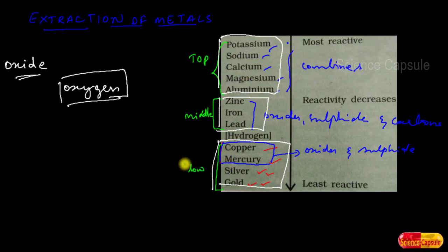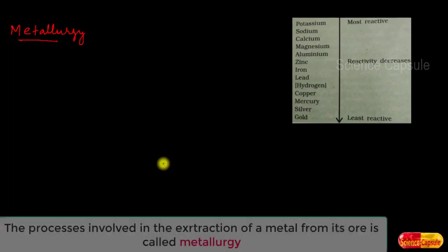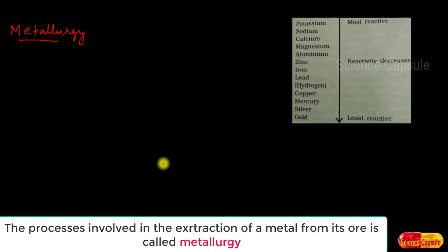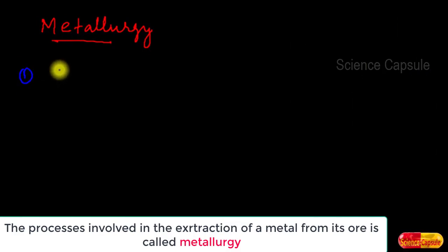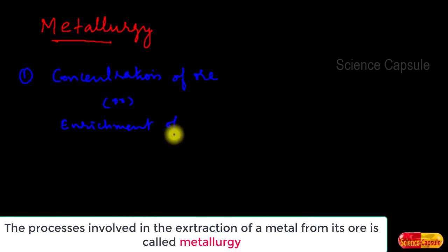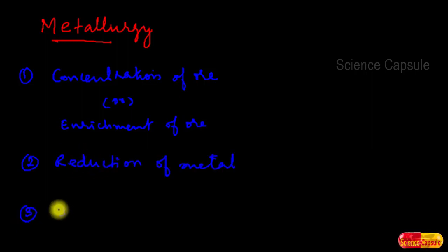Metallurgy refers to the processes involved in the extraction of metals. In order to extract a metal from its ore, there are three basic steps: first, concentration of ore (also called enrichment of ore); second, reduction of metal; and third, refining. These three steps collectively constitute metallurgy.